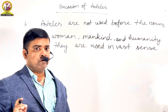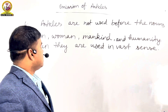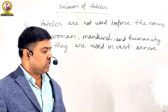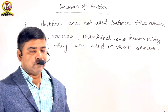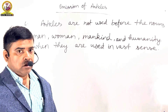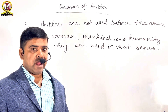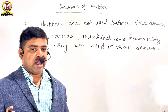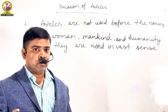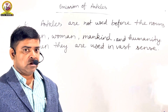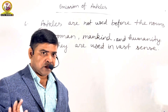Friends, the 6th rule of omission of articles is: articles are not used before the nouns man, woman, mankind, and humanity when they are used in a vast sense.